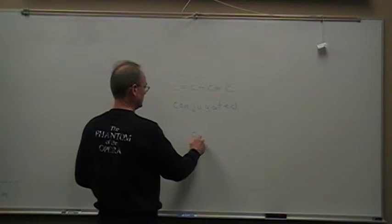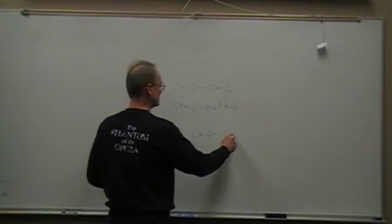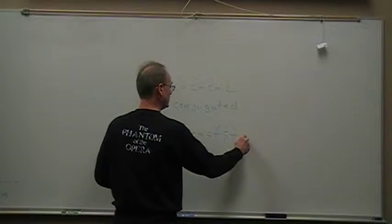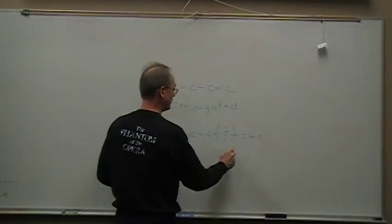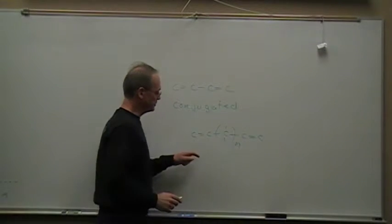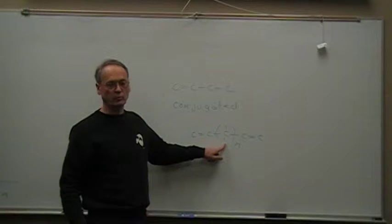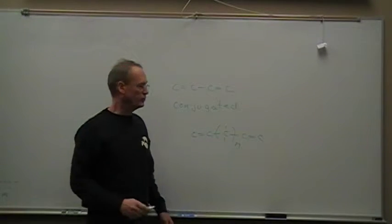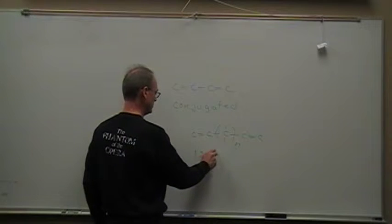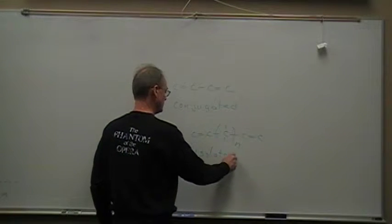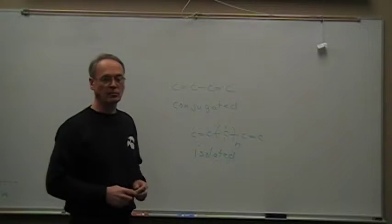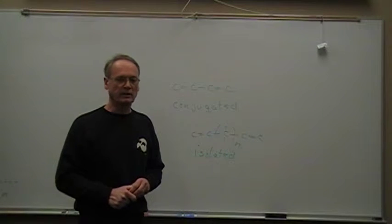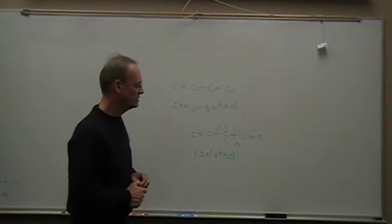One is simply having at least one saturated carbon in between double bonds — it could be more than one. So you have double-single-single-double. Those are known as isolated dienes because the two double bonds are isolated from each other; they don't communicate with each other. Each one acts as a regular alkene double bond.